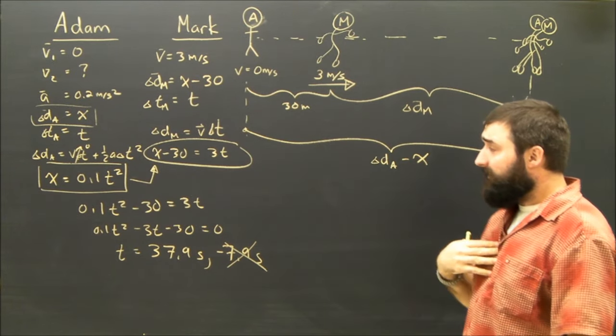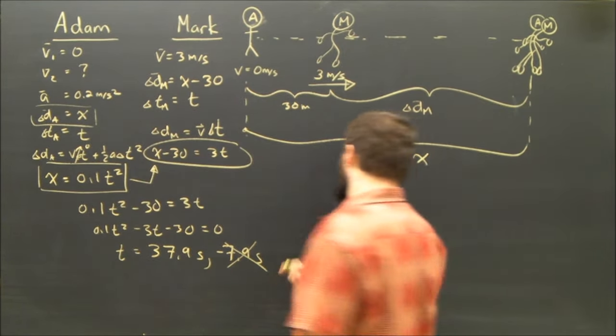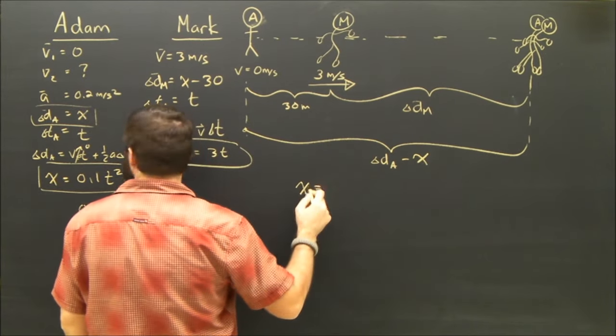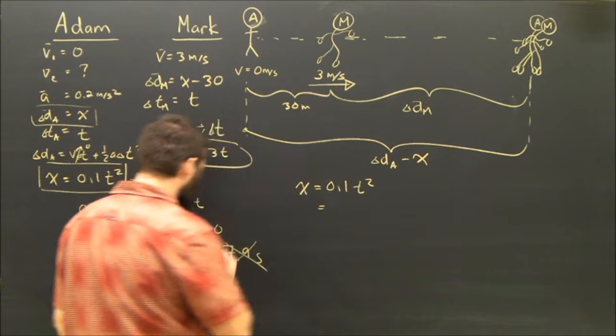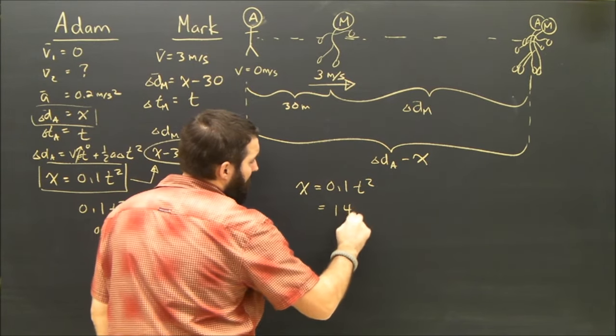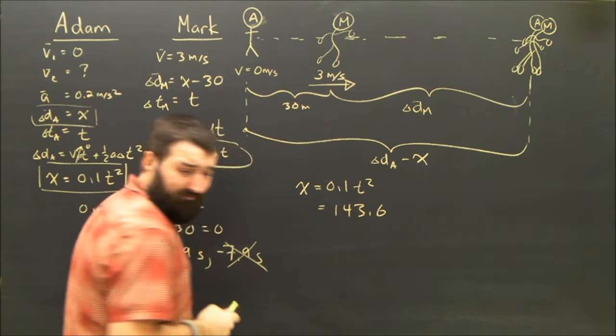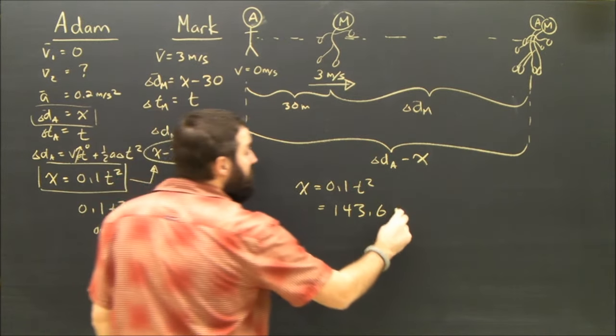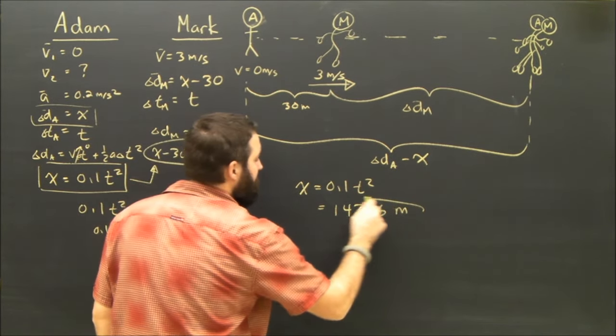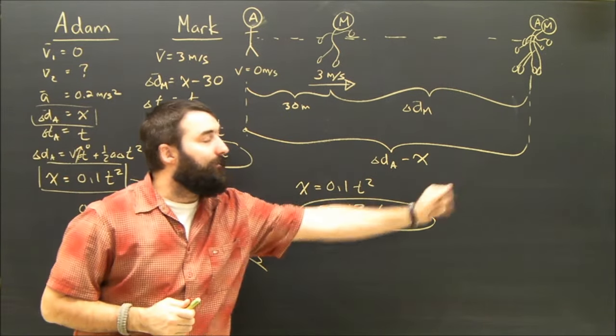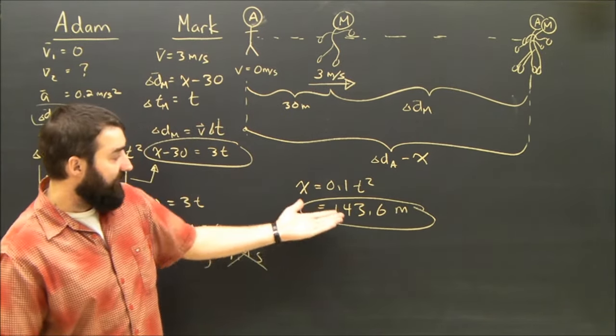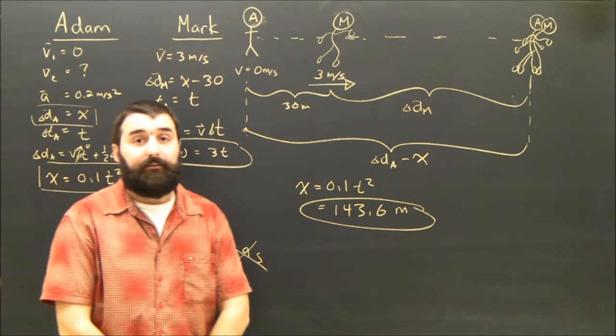How far did Adam go in that time? Well, we already know the formula for that. We're trying to find x at 0.1t squared by square 37.9. Multiply it by that, I get 143.6 meters. And that's how far Adam had to run. Mark obviously had to run 30 meters less because he had the head start.